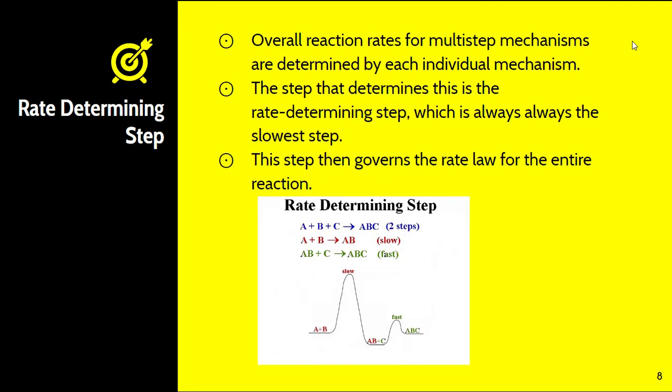When determining the reaction rate for multi-step mechanisms, some steps will be slow and some will be fast. The step that determines the overall rate is called the rate-determining step, which is always the slowest step. This governs the rate law for the entire reaction — your reaction is only as fast as its slowest step.